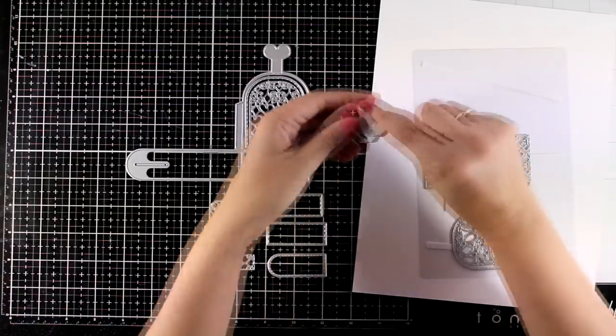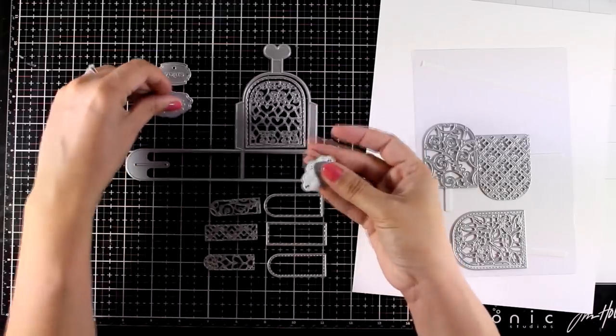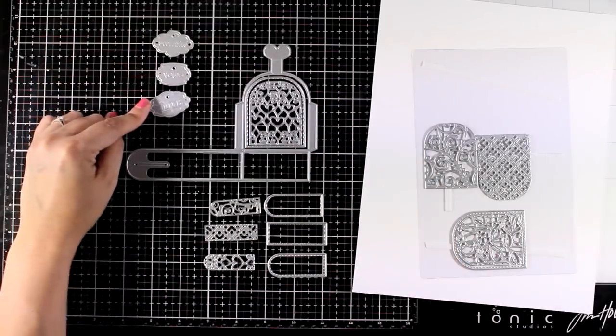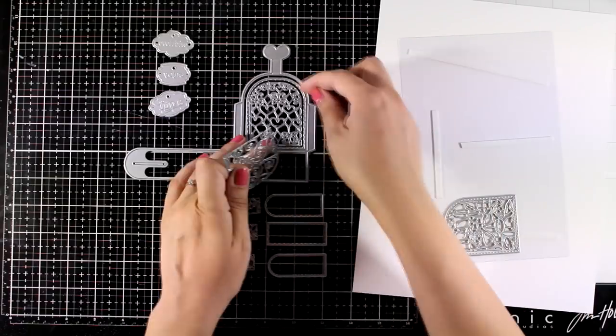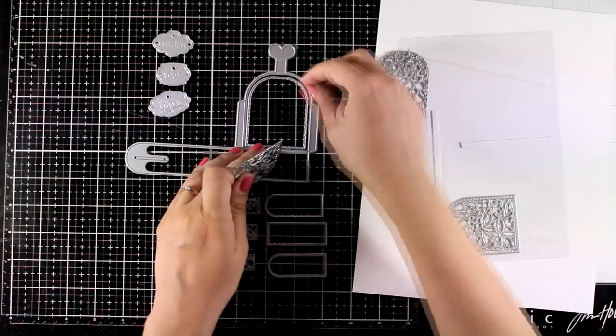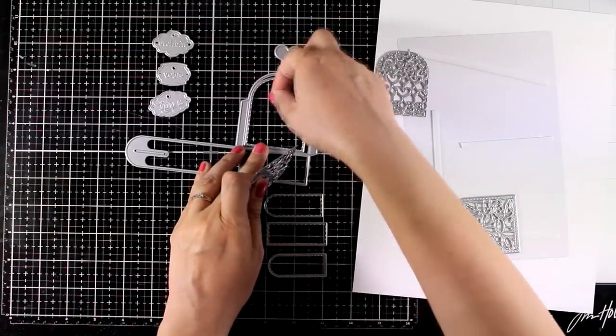You also get three tags in different shapes with a hole on top so you can easily thread it through. And one of them says with love, the other says enjoy, the third one a gift. So they all give you a beautiful embossed look.